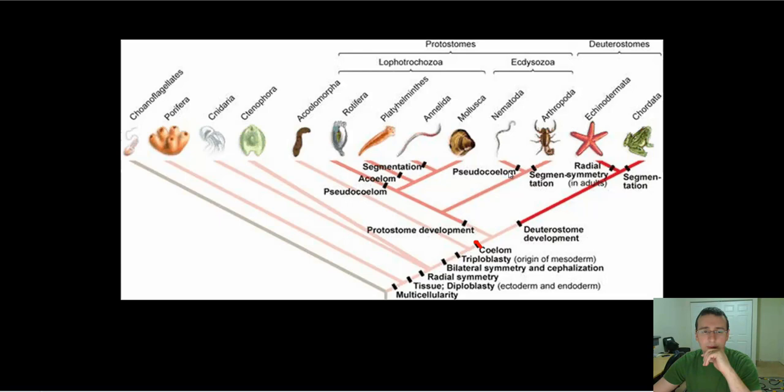but then they put the nematodes, which are pseudocoelomates, in a separate branch as well. So it gets confusing in a way because you have some pseudocoelomates here and you have other pseudocoelomates there. So see how you have different arrangements.